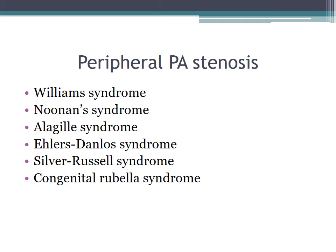For peripheral branch pulmonary artery stenosis, the typical genetic associations to know are Williams syndrome, Noonan syndrome, Alagille syndrome, Ehlers-Danlos, Silver-Russell syndrome, and congenital rubella. The classic auscultatory finding is a murmur in the pulmonary area that radiates prominently to one or both axillae.